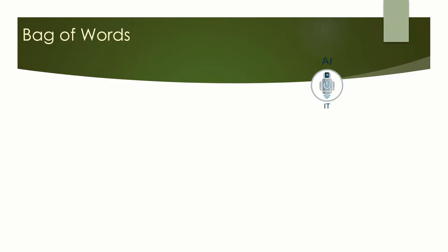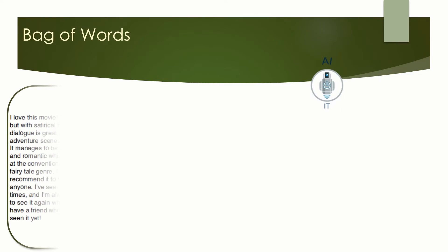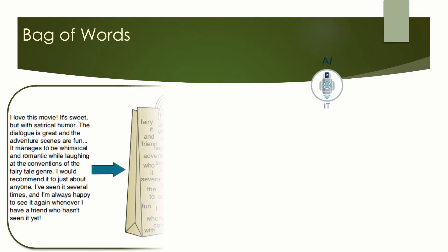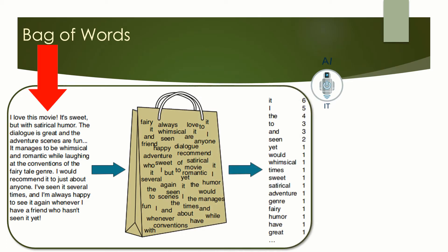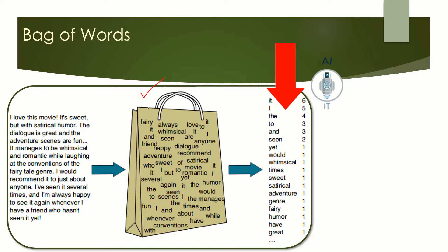Bag of Words is a natural language processing model which helps in extracting features out of the text that can be useful in machine learning algorithms. This image gives us a brief overview about Bag of Words. Let us assume the text on the left in this image is the normalized corpus which we have got after text normalization. As we put this text into the Bag of Words algorithm, the algorithm returns us with unique words and the number of occurrences of these words in the corpus.